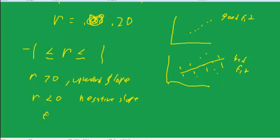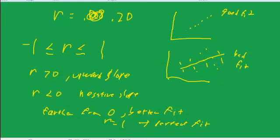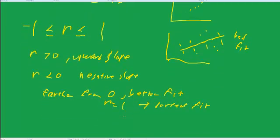Given these, the farther from 0, the better the fit. So r equals 1 would be a perfect fit. And r equals 0 would be no fit. r equals negative 1 would also be a perfect fit, but a negative relationship.